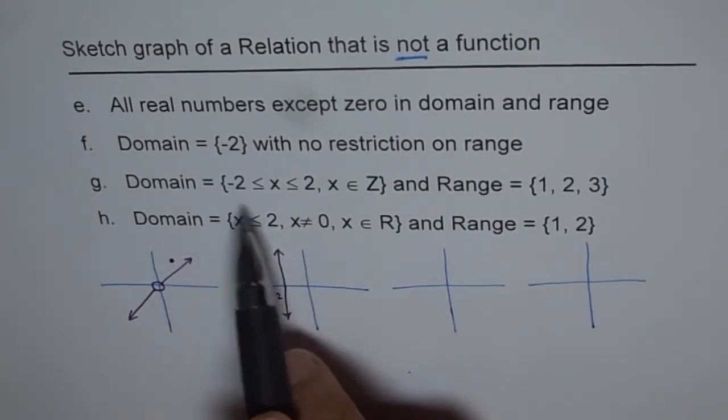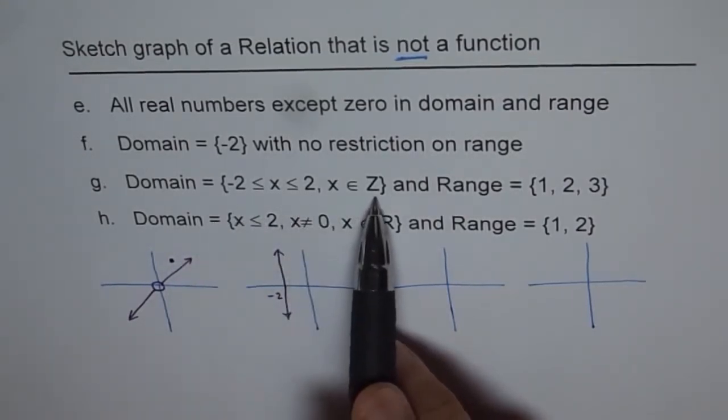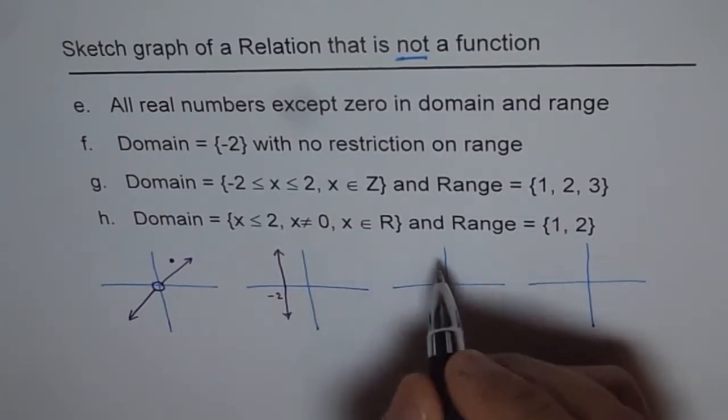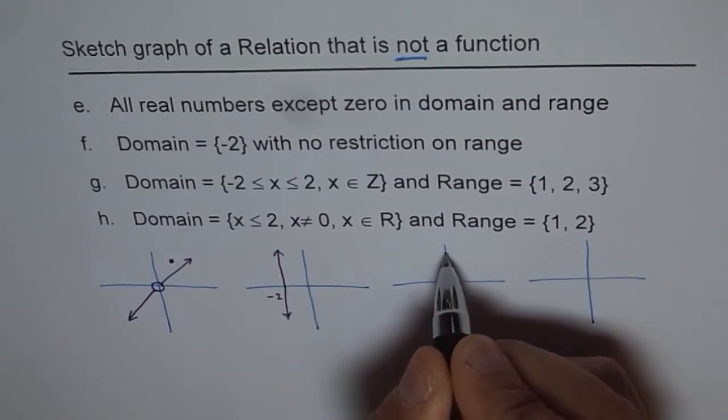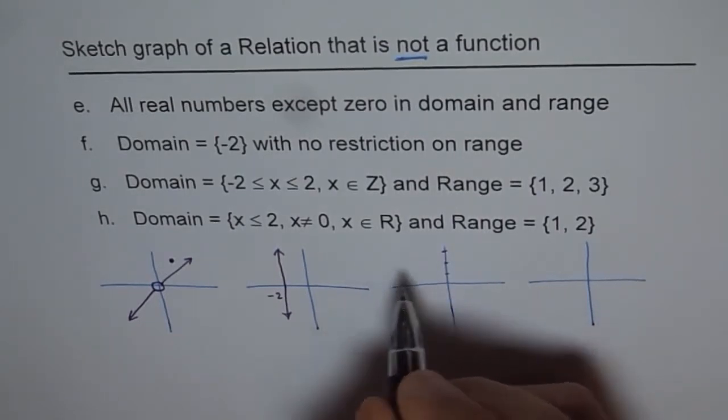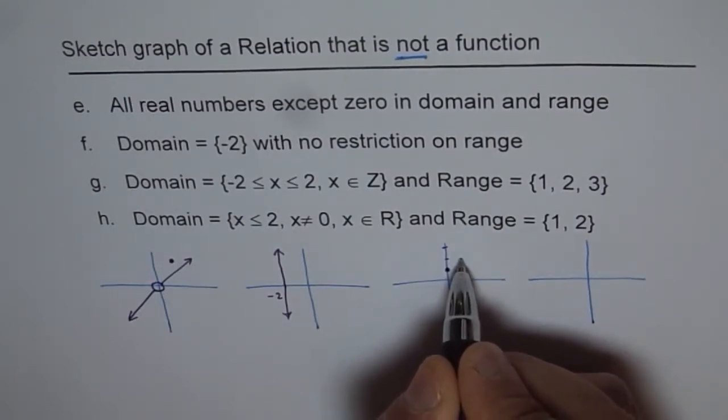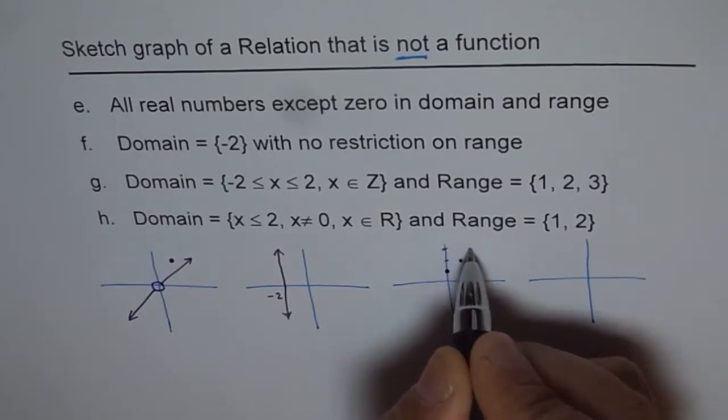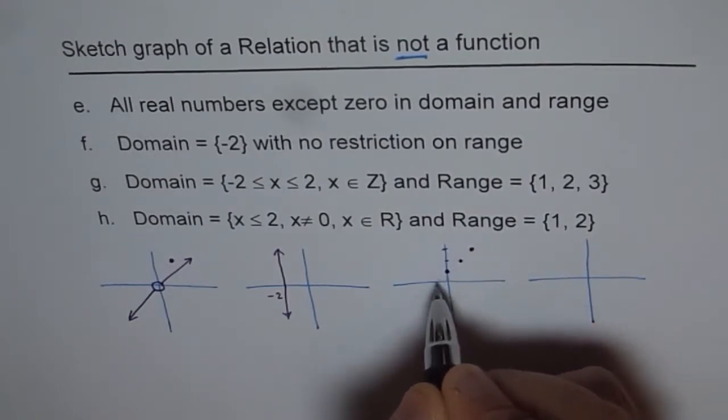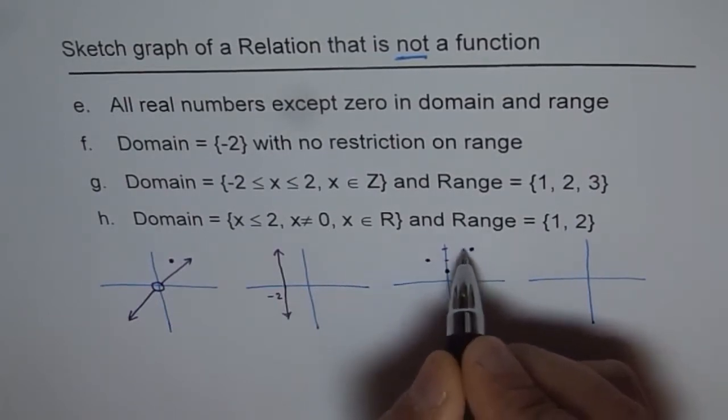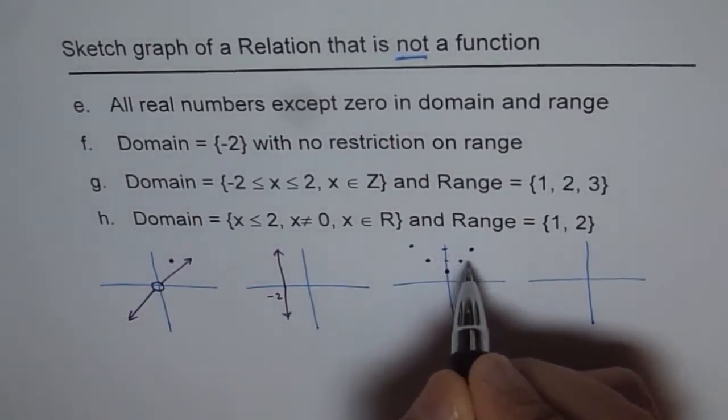G is domain between -2 to 2 but integers, don't connect them, and the range is {1, 2, 3}. So let's say these are our points 1, 2, and 3. So basically at 0 we can have 1, at 1 we can have 2, and at 2 we can have 3. So we get this kind of a graph on this side and here also we can have this kind of a graph. So that meets the criteria.